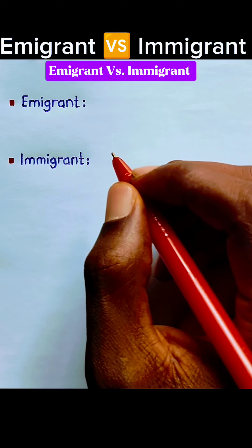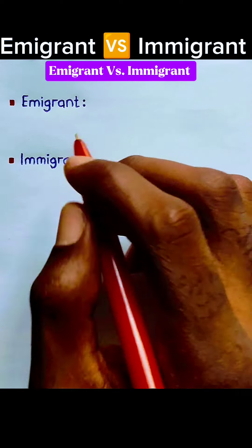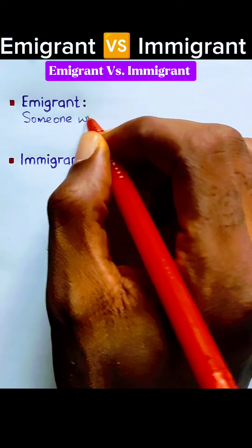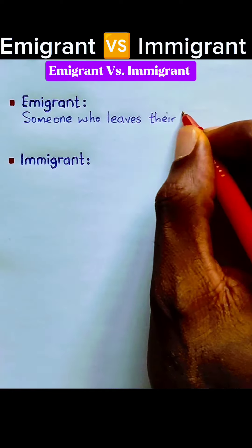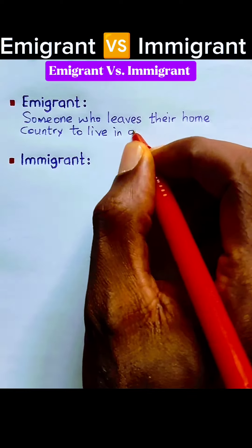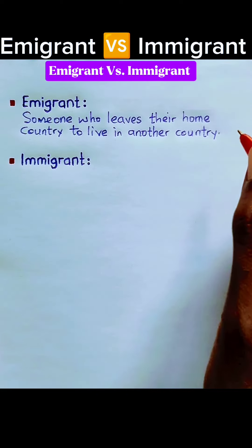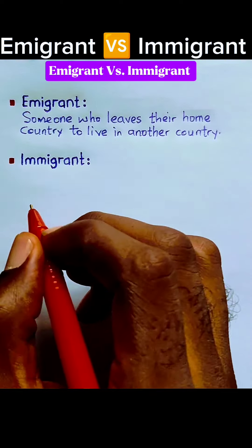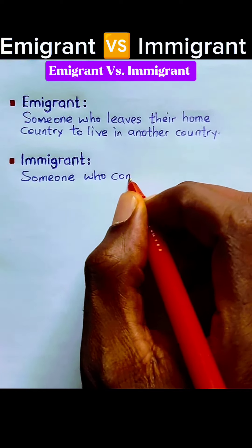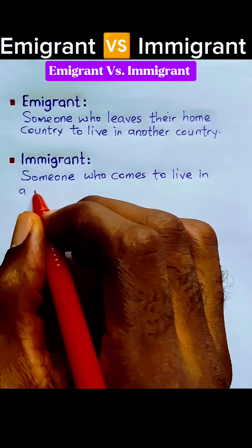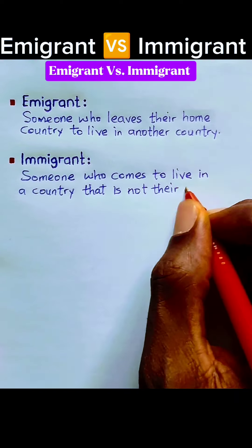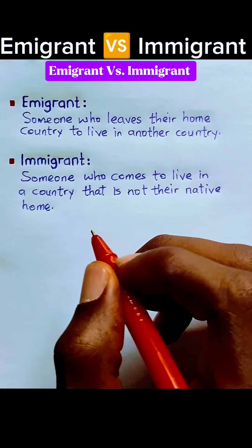Now, who is an emigrant? An emigrant is someone who leaves their home country to live in another country. Who is an immigrant? An immigrant is someone who comes to live in a country that is not their native home.